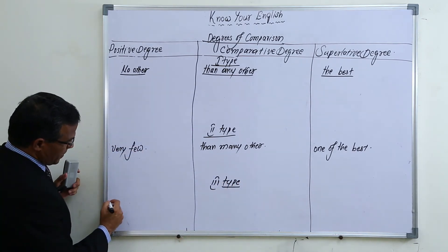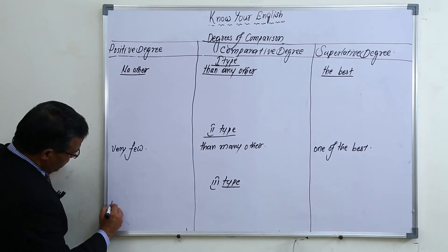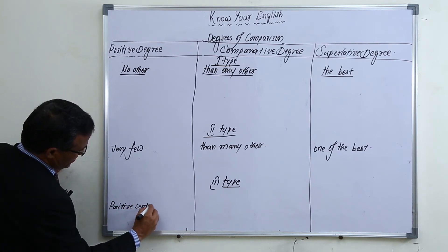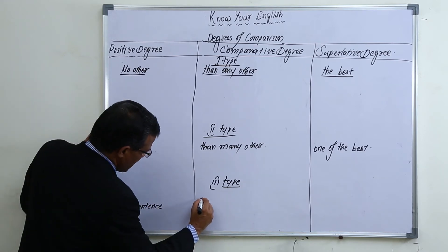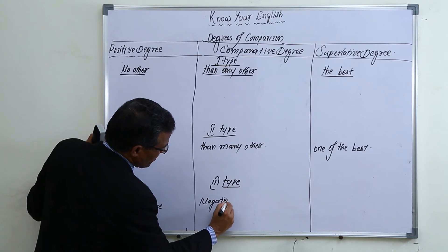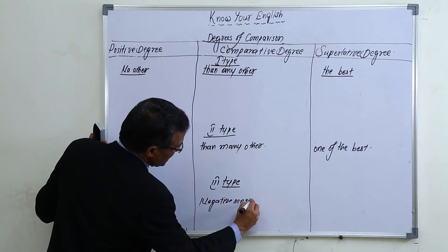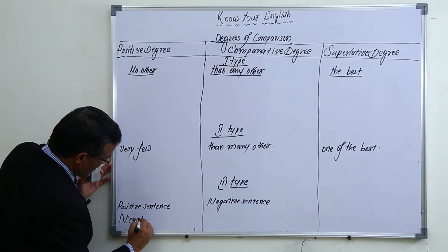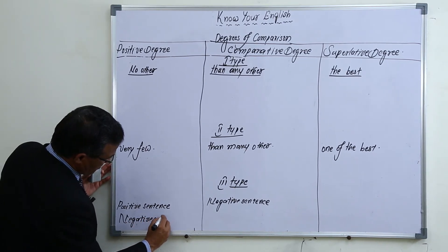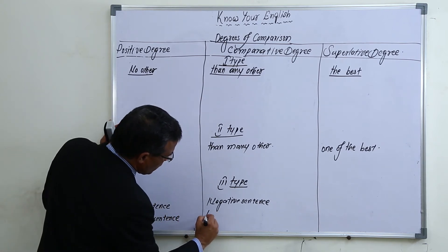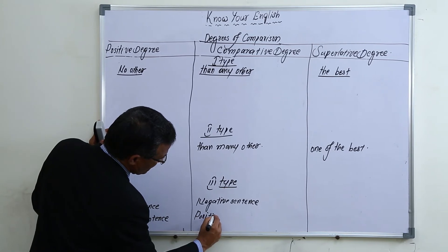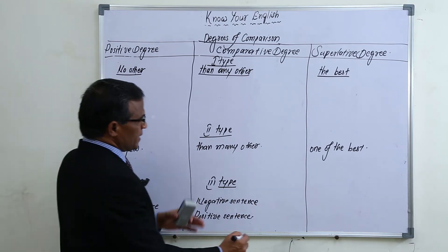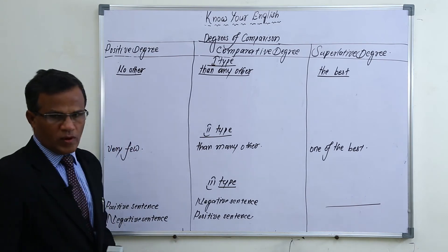The third type involves negative sentences. When a positive sentence is there, a comparative degree negative sentence is there, and also a negative sentence — but here you don't find a superlative degree form. I will give you examples for this.